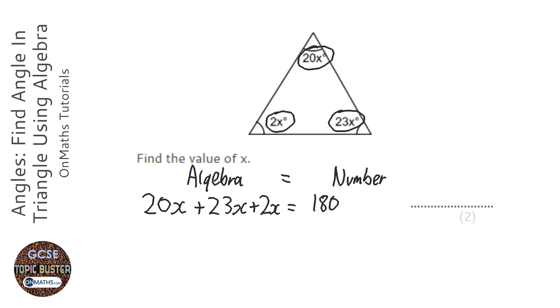Let's collect the like terms. That would be 45x equals 180. To get x on its own, this 45 here is times 45, so I do the opposite which is divide by 45 on both sides.